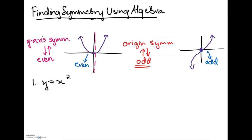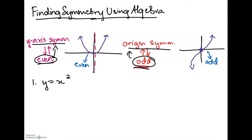Now let's connect these terms and use algebra to find symmetry when we're not given a graph. Our first question gives us the equation y = x². We know y-axis symmetry results in an even function and origin symmetry results in an odd function, so we can use the method of finding if a function is even or odd and then correlate it back to the symmetry. To do that, substitute a positive and negative version of a number into your function.